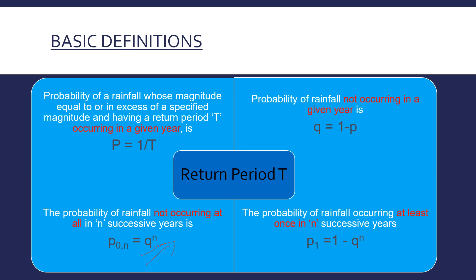If we want to know the probability of rainfall occurring at least once in n successive years, then since Qⁿ is the probability of not occurring at all, the probability of occurring at least once is 1 − Qⁿ.